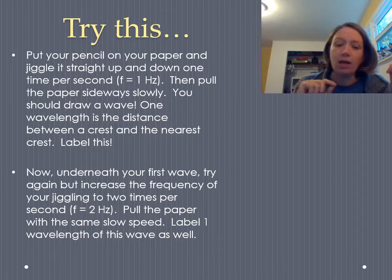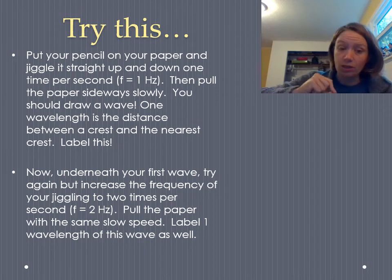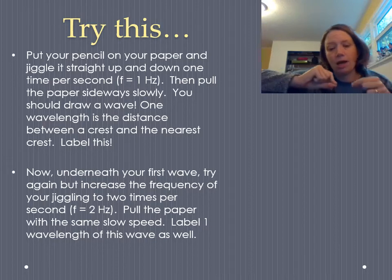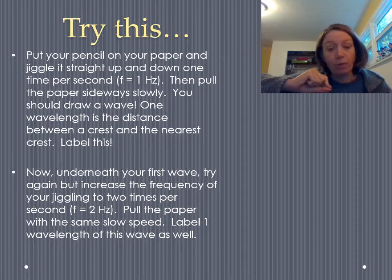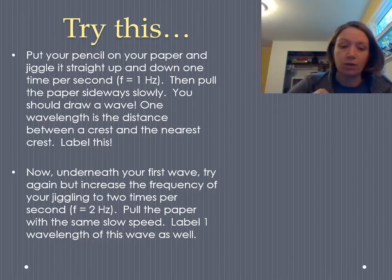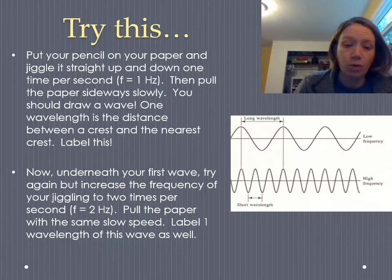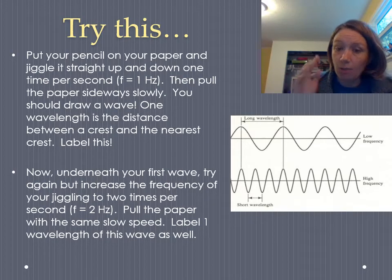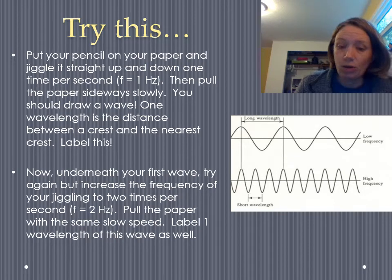Now underneath your first wave, do it again. But this time I want you to increase the frequency of the jiggling to two times per second. So you're going up and down two times per second instead of one. The tricky thing here is you want to pull the paper at the same speed you were pulling above. So no change in velocity, just changing the frequency. And then on your second wave, you want to label one wavelength as well. So what you should have is a picture that kind of looks like what we've seen above in the picture shown. We have the low frequency wave on the top with a long wavelength and the high frequency wave at the bottom with a short wavelength.